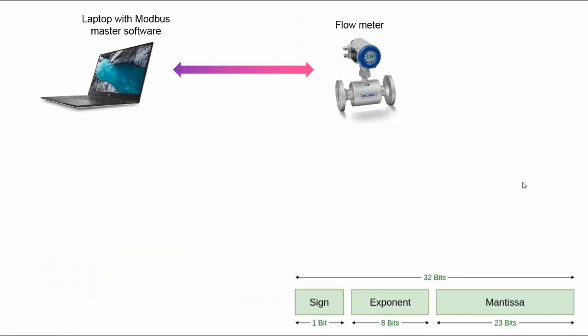So this example is actually generated from an email I got from a student enrolled in one of my courses. We have our flow meter here, laptop with Modbus master software reading via Modbus TCP, and the flow rate as it appeared on the flow meter was 360.28.